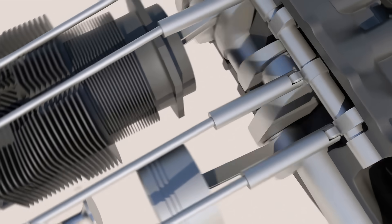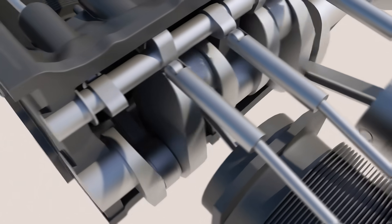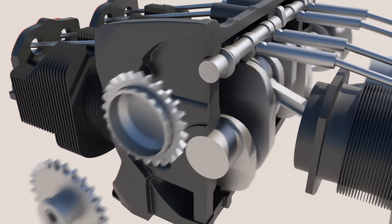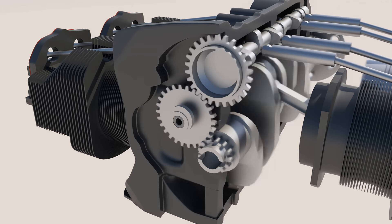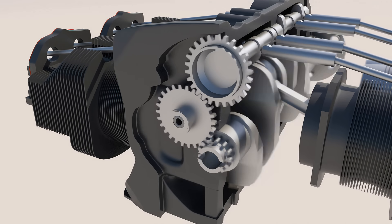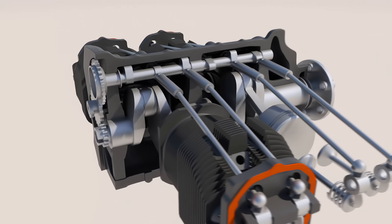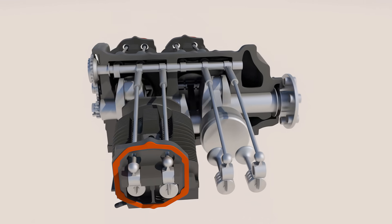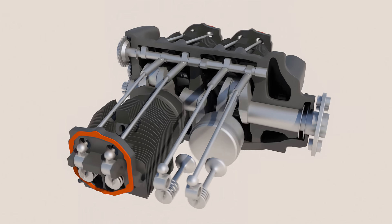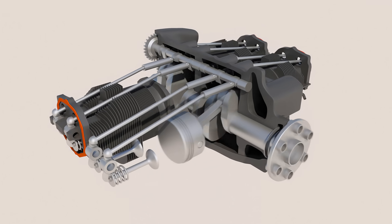Getting the valves to open at the exact moment is very crucial for the engine to operate. Because of that, the camshaft is geared to the crankshaft, so they will remain synchronized. The camshaft is geared to spin half as fast as the crankshaft. This results in the valves opening twice during the four-stroke cycle.